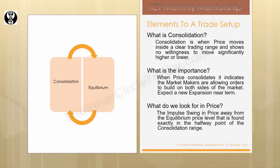Lastly, we have consolidation. Whenever we're referring to consolidation, we're directly relating that to the ICT tool of equilibrium. Consolidation is when price moves inside a clear trading range and shows no willingness to move significantly higher or lower. When price consolidates, it indicates the market makers are allowing orders to build on both sides of the market — expect a new expansion near term. We're waiting for the impulse move in price away from the equilibrium price level found exactly at the halfway point of the consolidation range.